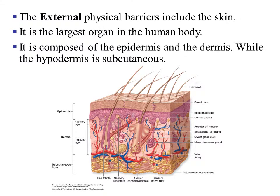The external physical barriers include the skin. The skin is the largest organ in the human body, and it is composed of the epidermis and the dermis. Below those two layers is a subcutaneous layer called the hypodermis. The hypodermis contains the fat in the body, while the epidermis and dermis are the top two layers considered the skin.